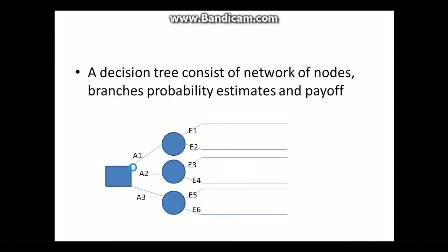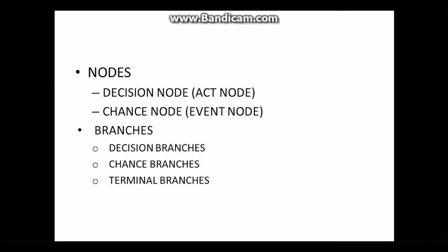So if we have a decision problem, we can create a diagram and select one solution. The first element of a Decision Tree is the nodes — specifically, Decision nodes and Chance nodes.